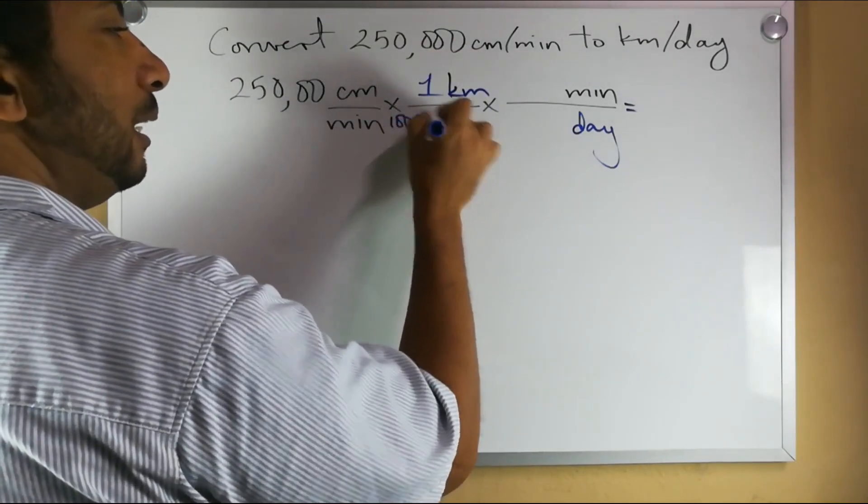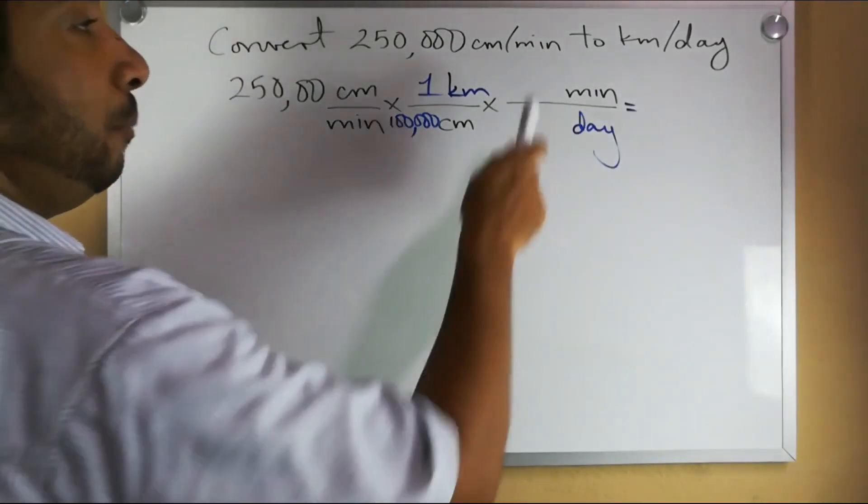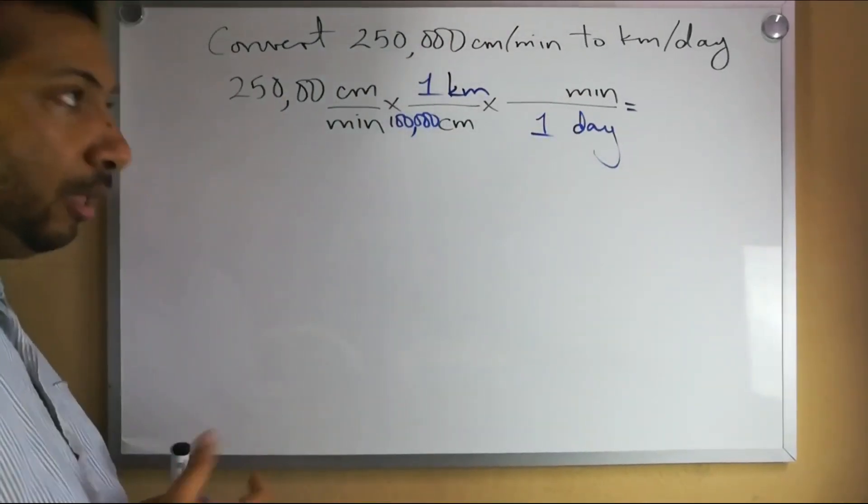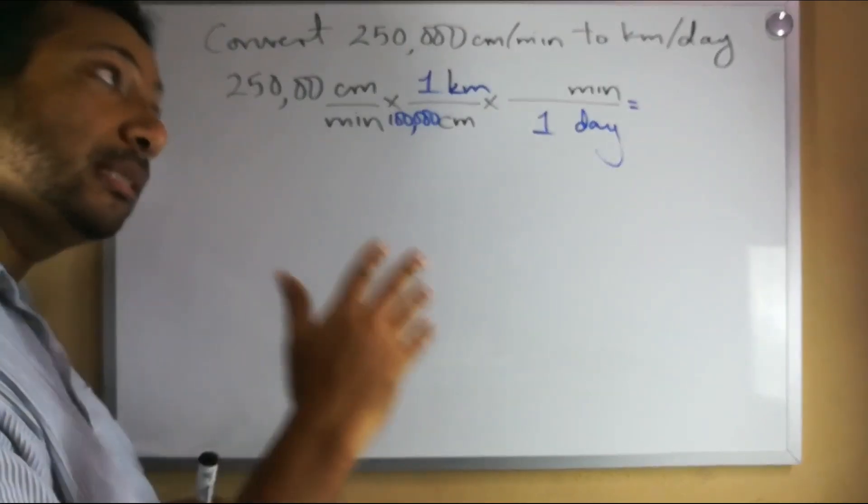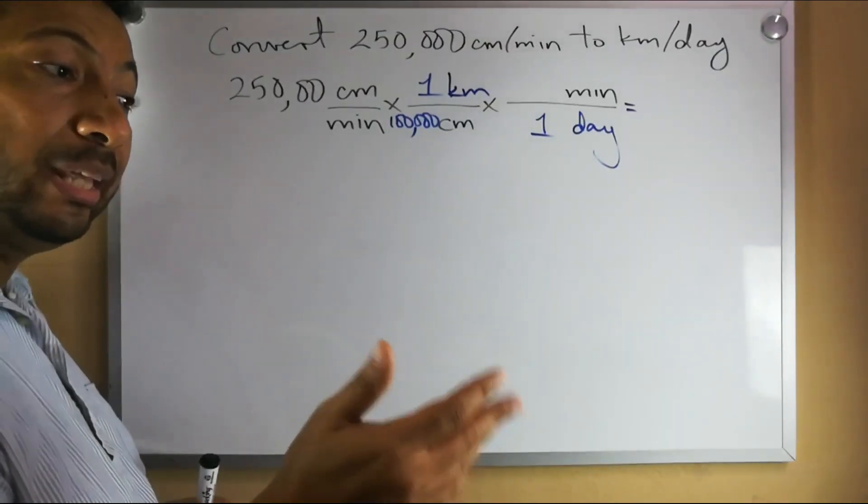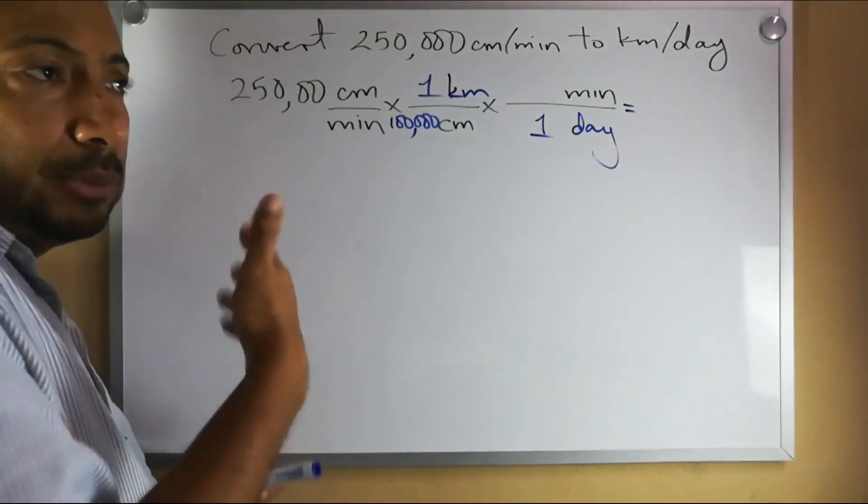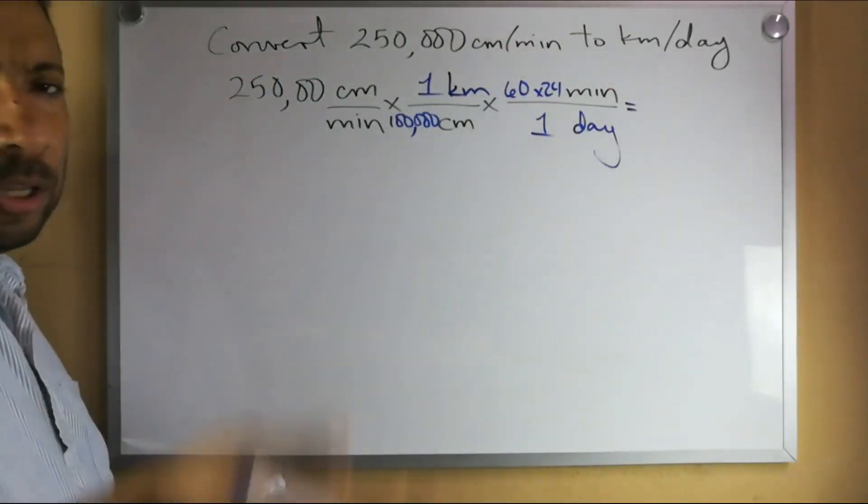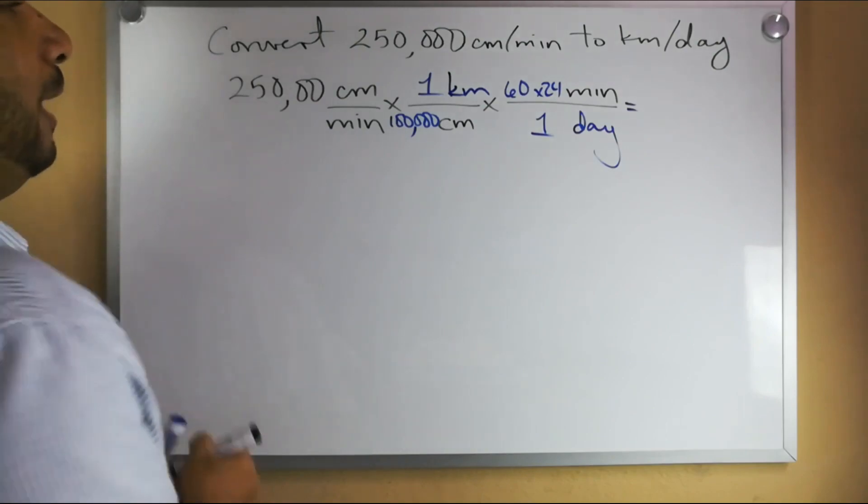Next, how many minutes are in a day? In one single day? Let's see, how many minutes are in an hour, that would be 60. How many hours are in a day, that would be 24. So you could say 60 times 24 minutes are in a day. You could multiply that out if you wish but it's fine if you leave it at 60 times 24.